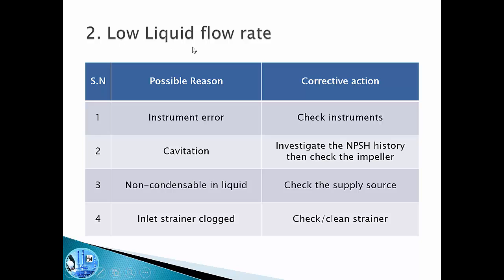The second problem is low liquid flow rate. The reasons could be an instrument error — we need to check if our instruments are giving correct readings. It could be cavitation of the casing or impeller, so we need to investigate the suction pressure history and check the impeller mechanically. It could be non-condensables in the liquid — we should check if any supply line feeding the common suction line is introducing gases, as this will affect pump flow. It could also be a clogged inlet strainer — we need to clean the strainer and restart the pump.